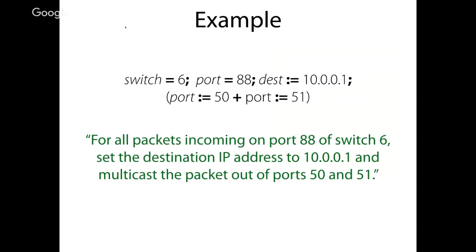Here's a simple NetKAT program example: it matches all packets located at switch 6, port 88, rewrites their destination IP address to 10.0.0.1, then multicasts the packet by creating two copies — sending them out of both port 50 and port 51. The plus operator (union) creates two copies of the packet to send out of multiple ports. The sequential composition operator (semicolon) is used to do things one after another, familiar from any imperative programming language.